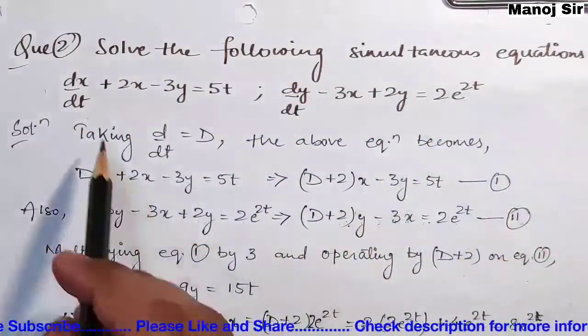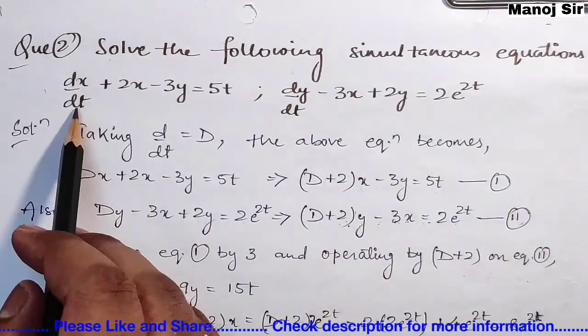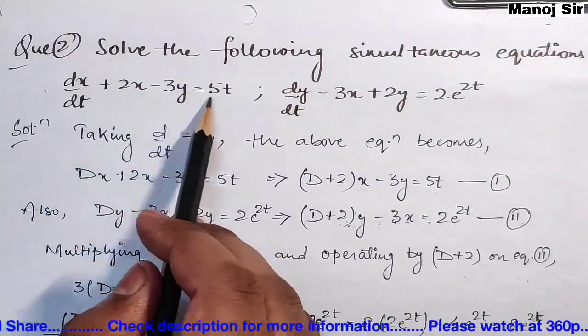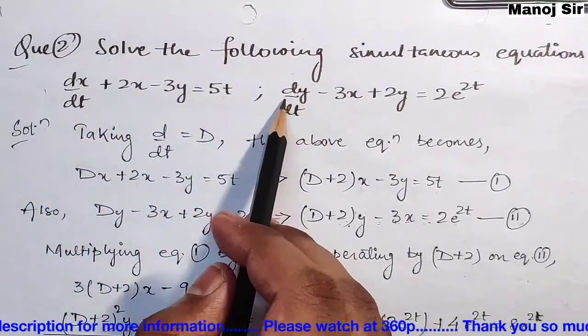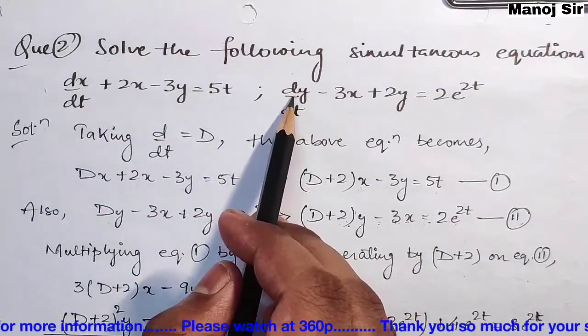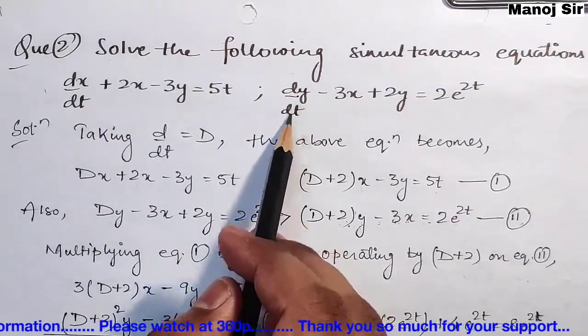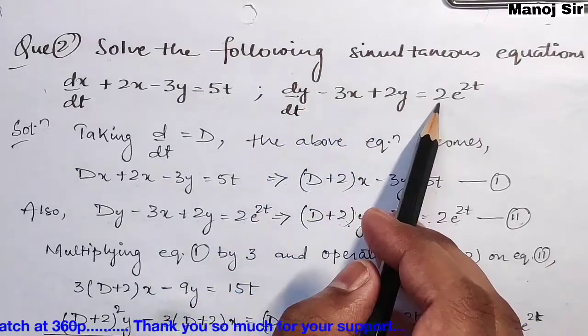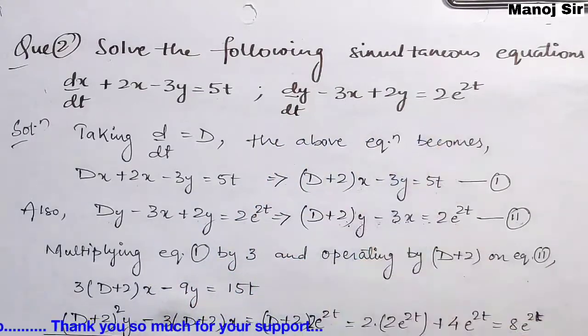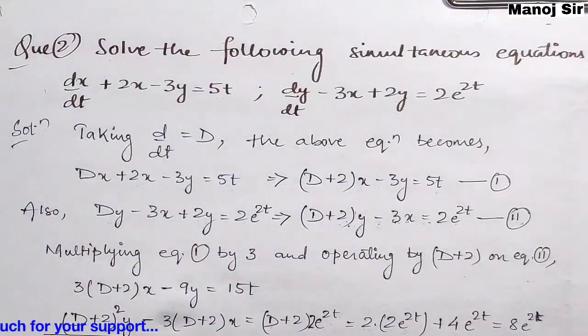Let us start solving this very important problem. Solve the following simultaneous linear equations: dx/dt + 2x − 3y = 5t, and the second equation is dy/dt − 3x + 2y = 2e^(2t).